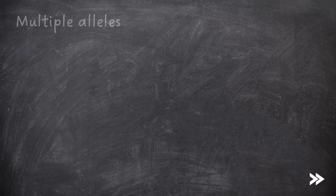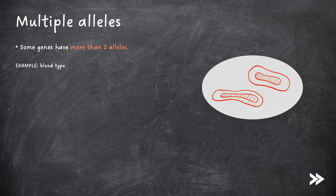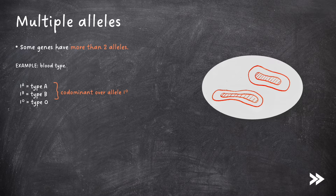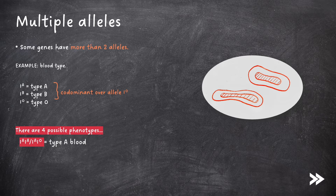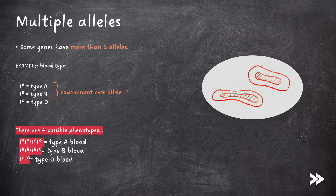Next we need to know about multiple alleles. Some genes have more than two alleles. For example, blood type is coded for by a gene which has three alleles: type Ia, which codes for type A blood; type Ib, which codes for type B blood; and type Io, which codes for type O blood. Note that types A and B are codominant over allele Io. Overall, this means there are four possible blood phenotypes. Homozygous Ia or heterozygous IaIo results in type A blood; homozygous Ib or heterozygous IbIo results in type B blood; homozygous IoIo results in type O blood; and if both codominant alleles Ia and Ib are present, they are both expressed, giving type AB blood.